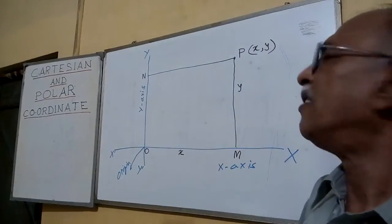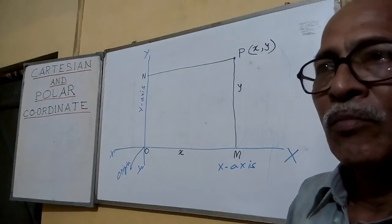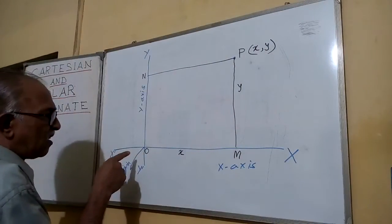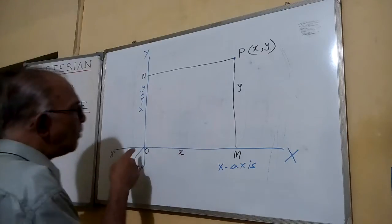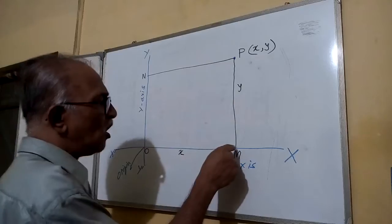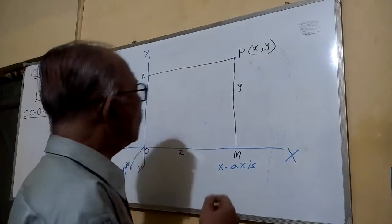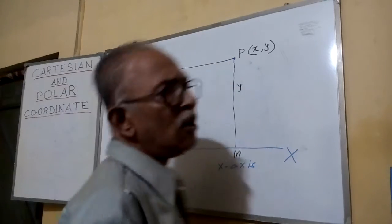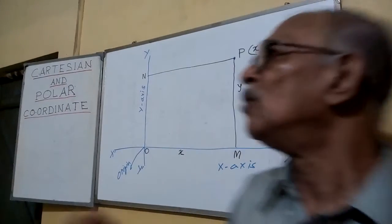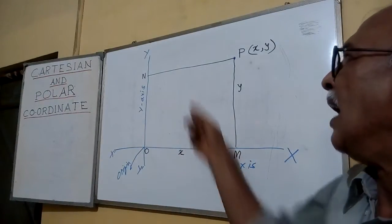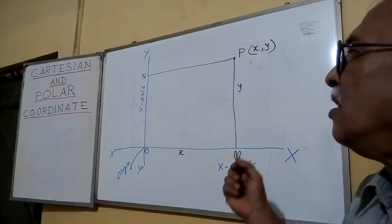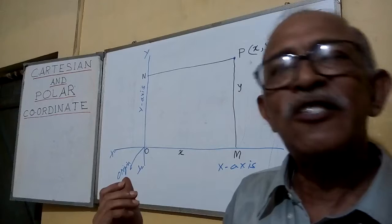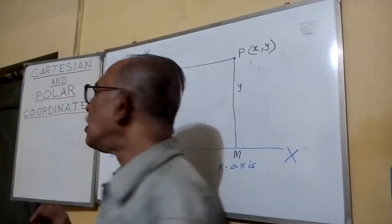In this way, we can represent a point in a Cartesian coordinate system. That means if you start from the origin, move a distance x along the x-axis, you will reach the point N. Then move a distance y parallel to the y-axis and you will reach T. So in this way we are locating the position of a point, and this system is known as the rectangular Cartesian coordinate system. But this is not the only system.